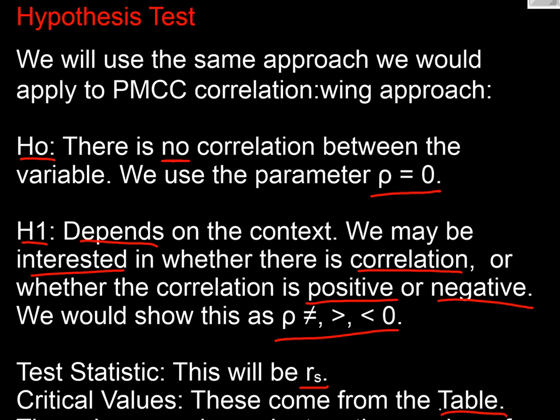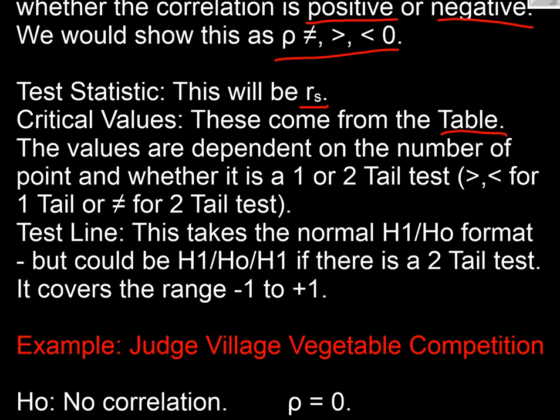And again, we need to know the number of points of data, whether it's a one-tail or a two-tail, and what our significance level is. And then we're going to create our test line. So again, it's going to be could be H1/Ho or Ho/H1, or H1/Ho/H1, but it's going to range—the Spearman correlation coefficient is somewhere between minus one and plus one.